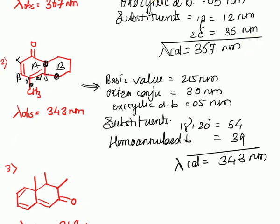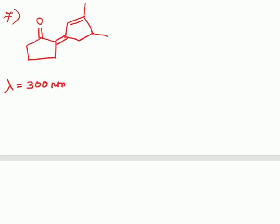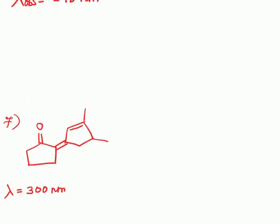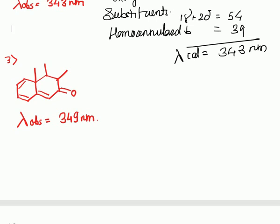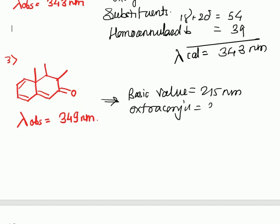The next example is again a 6-membered enone system. The basic value is 250 nanometers. Then extra conjugation contributes 60 nanometers, because there are 2 extra conjugations. Then homoannular: these two double bonds are in the same ring, so homoannular contribution is 39 nanometers.